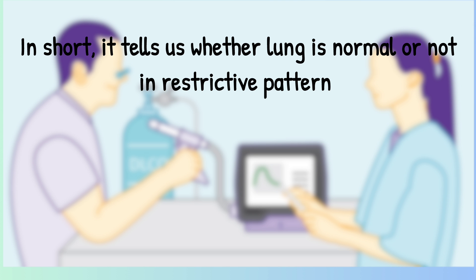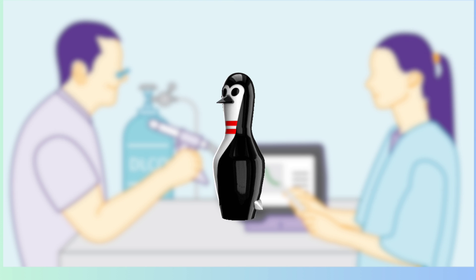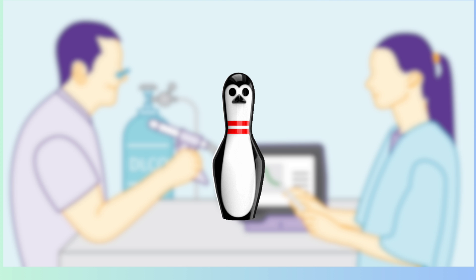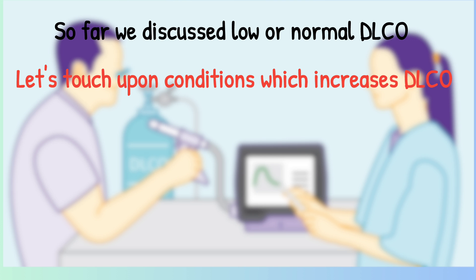In short, DLCO tells us whether the lung is normal or not in a restrictive pattern, and helps narrow down the differentials. So far we have discussed low or normal DLCO. Now, let's consider what it means if DLCO is raised — meaning more carbon monoxide is absorbed.